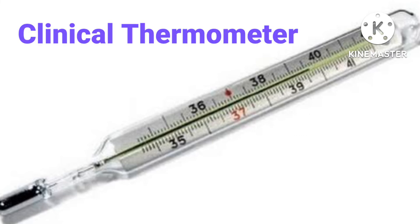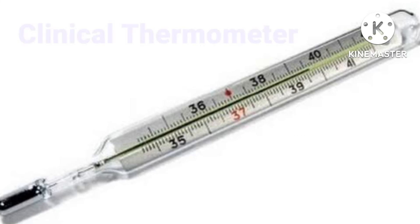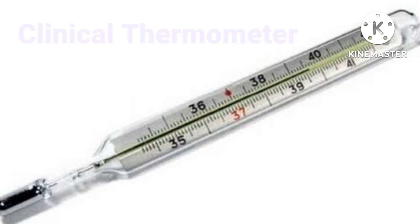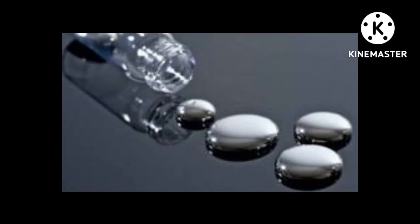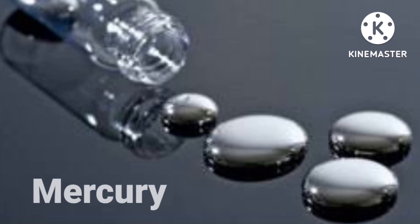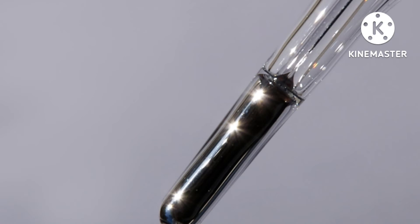Now let's discuss what is a clinical thermometer. A clinical thermometer is an instrument to measure human body temperature. It is a medical instrument made of glass, having a narrow glass tube. At the end of the glass tube, there is a glass bulb containing mercury. Mercury is the only metal in liquid state at room temperature, and it is used in thermometers because it has the quality to expand with even a small amount of heat.